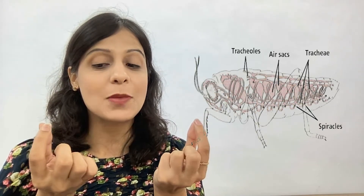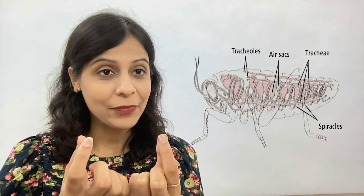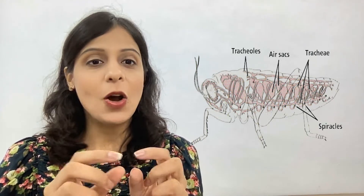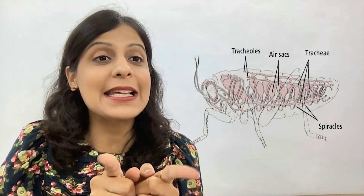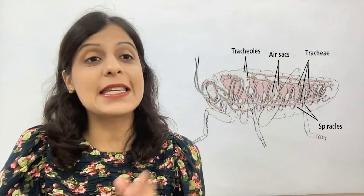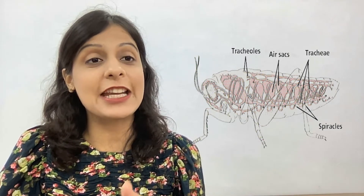The spiracles are linked in a dense network of air tubes which we call the trachea. Oxygen enters through the spiracles, travels into the tracheal tubes, and then reaches different cells. Those cells take oxygen and release energy. From the same spiracles, carbon dioxide is expelled out through the tracheal tubes.